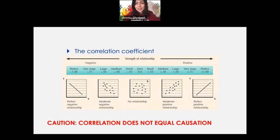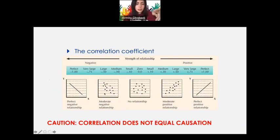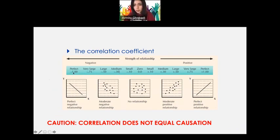Here you can see more correlation types. Zero correlation shows no pattern — data points are completely random. A moderate positive relationship is around 0.50, so it's somewhere in between. A moderate negative relationship is also not very strong. Then there's a perfect negative relationship of minus one — very steep and perfect. A perfect positive relationship has a strength of one with a positive sign — one variable increases and the second increases as well.